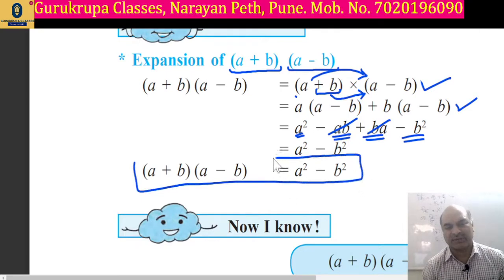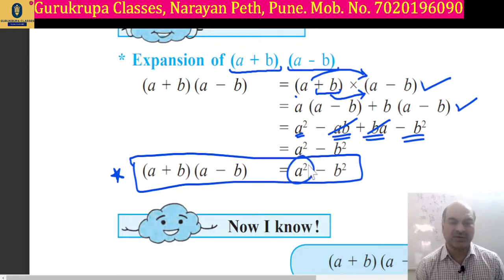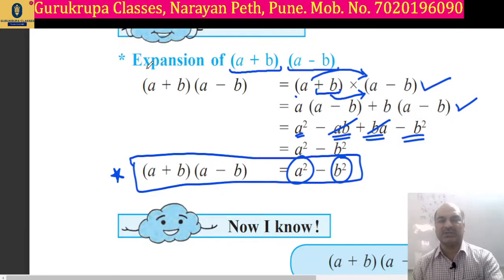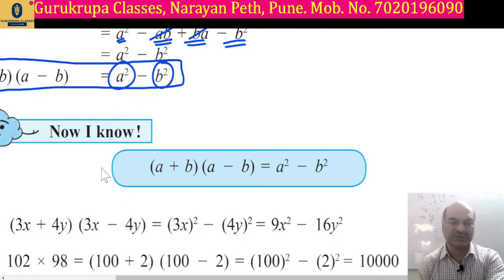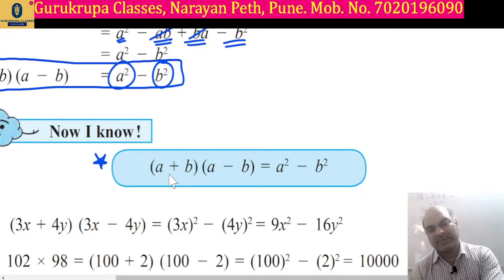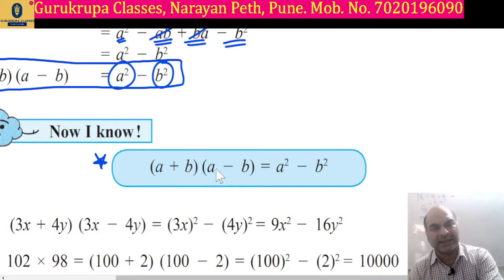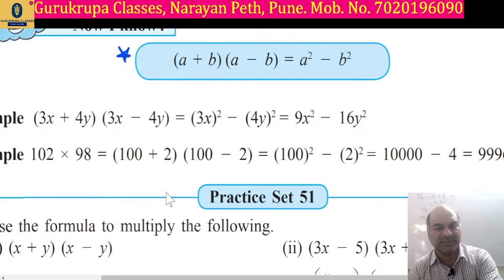So it is very simple to understand this expansion formula. The formula for a plus b multiplied by a minus b is equal to a square minus b square. This is a very easy and simple formula to learn. We just recite this formula: where a and b are same terms, a plus b and a minus b are addition and subtraction respectively.